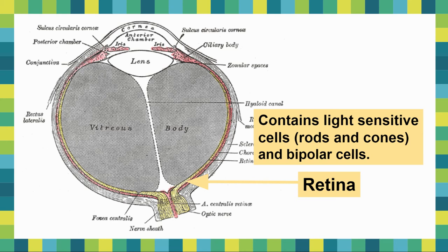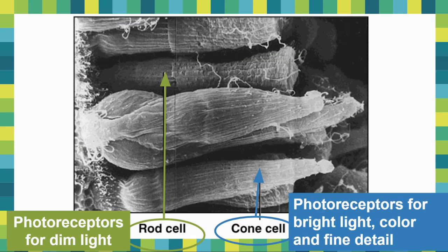The retina contains tons and tons of these photoreceptors. Photoreceptors for dim light are rods, and photoreceptors for bright light, color, and fine detail are cones. Cones also allow you to do things like reading because they let you see fine details on print. Rods are called rods because they're shaped like rods, and cones are called cones because they're shaped like cones.